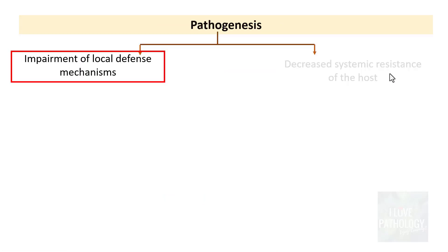Healthcare-associated pneumonia is defined as pneumonia occurring in patients who have had healthcare contact in the last few months — for example, hospitalization for more than two days in the last three months, intravenous antibiotic therapy, or residing in a healthcare setting. The most common organisms implicated are Staphylococcus aureus, methicillin-resistant Staphylococcus aureus (MRSA), Pseudomonas aeruginosa, and Streptococcus pneumoniae.